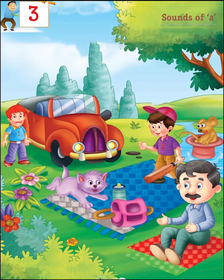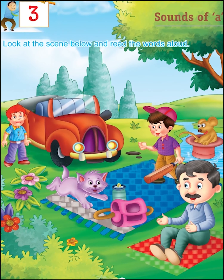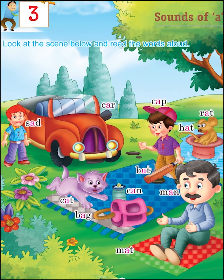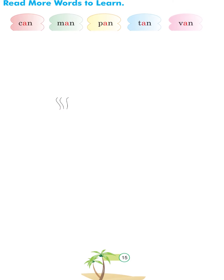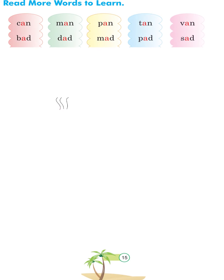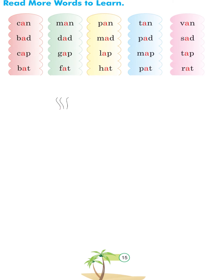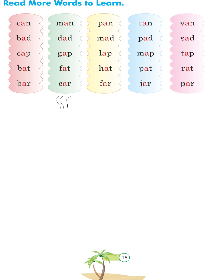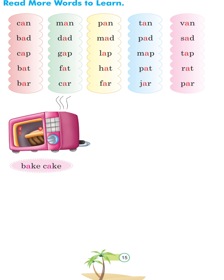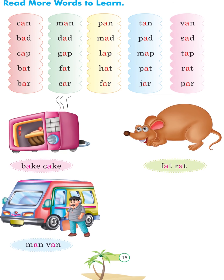Chapter 3: Sounds of A. Look at the scene below and read the words aloud: Sad, Car, Cap, Hat, Rat, Bat, Cat, Bag, Can, Man, Mad. More words to learn: Can, Man, Pan, Tan, Van, Bad, Mad, Pad, Sad, Cap, Gap, Lap, Map, Tap, Bat, Fat, Hat, Rat, Bar, Car, Far, Jar, Bake, Cake.